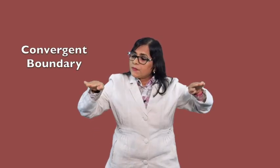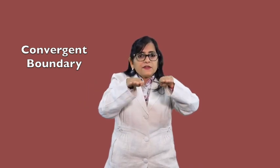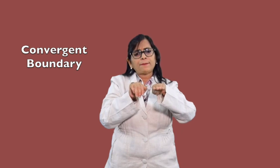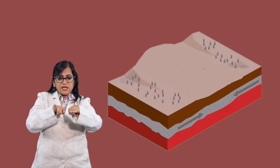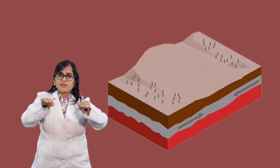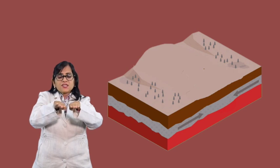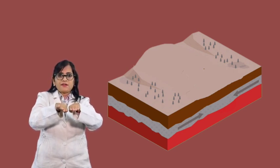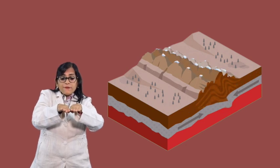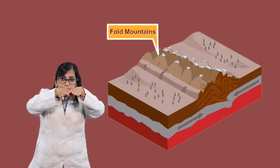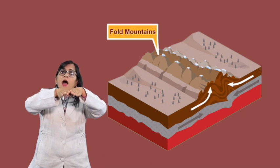The boundary where two lithospheric plates collide is called a convergent boundary, because two plates are converging at that point. When these two plates move towards each other, there will be an impact, and tremors on the surface of both plates. One outcome is that whatever material was in the intermediate area between the two plates gets compressed, folded, and rises up to form a fold mountain.